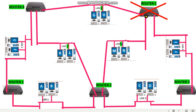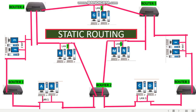Some key points about static routing: Static routing is used in small networks. It is a manual routing process, and all the packets will travel through a predefined route, so it provides more security. However, the problem with static routing is that if a link fails, it cannot reroute the traffic automatically. Manual intervention is required to reroute the traffic. Based on traffic conditions and other factors of the network, it will not change the route.